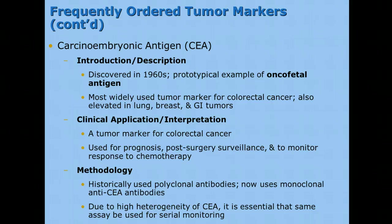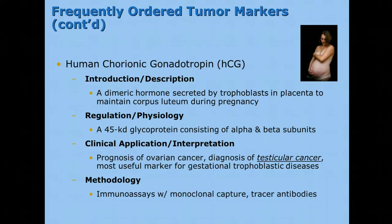Next is carcinoembryonic antigen, or CEA, developed in the 1960s. It is a very good tumor marker for colorectal cancer, and is also found elevated in lung, breast, and GI tumors. It is an oncofetal antigen. A mnemonic some students use is 'cancer eats anus' to remember that CEA is for colorectal cancer. Human chorionic gonadotropin, or HCG, is usually used to test pregnant women, but it can also be used in men to diagnose or monitor the treatment of testicular cancer. So if you receive a lab sample on a male for an HCG, it does not mean it's wrong — it could mean they're looking for testicular cancer.